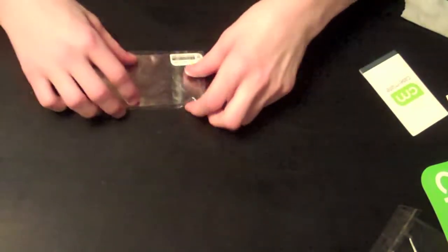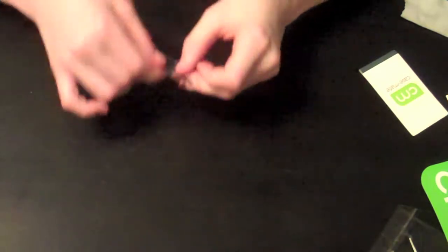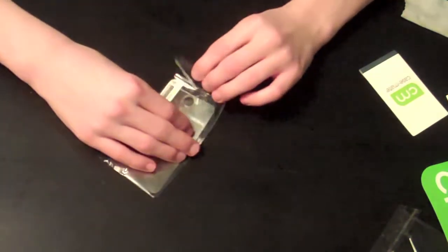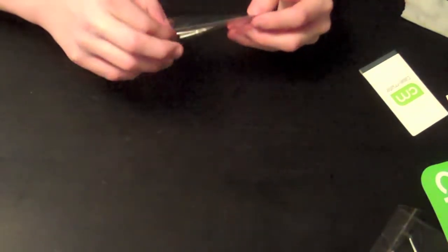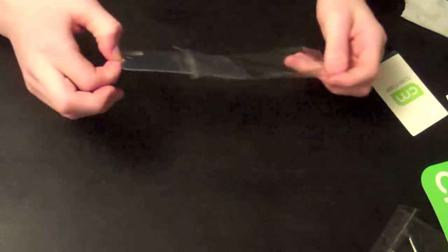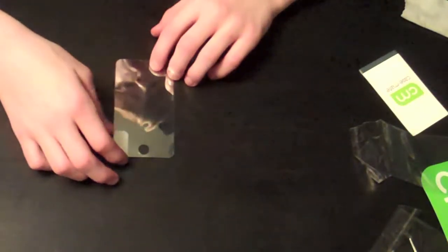So then in here, this is the screen protector itself. And it is a mirror screen protector, so when you apply it to your iPod it will look like a mirror when it's on the lock screen, and it's very nice. As you can see, you can see the reflection, which is really nice.